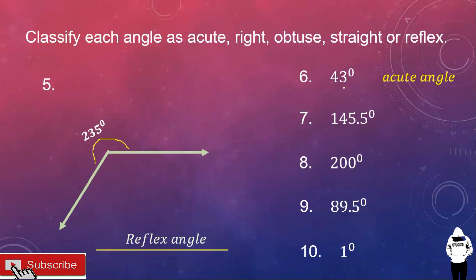Number seven, 145.5 degrees. So, this is greater than 90 but less than 180 degrees. So, this is an obtuse angle.